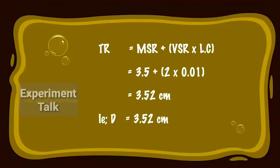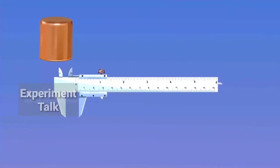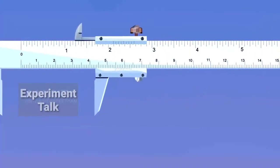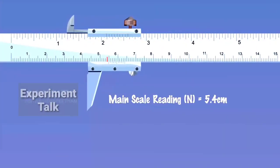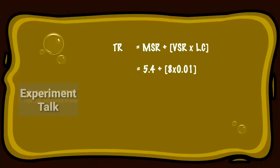That is D is equal to 3.52 cm. Release the beaker from the jaws of the Vernier Calipers and place it at the end to extend the depth measuring prong through the beaker till it touches its bottom. Note the MSR and VSR readings. Calculation: TR is equal to MSR plus VSR into least count, which is equal to 5.4 plus 8 into 0.01, that equals 5.48 cm. That is depth D is equal to 5.48 cm.